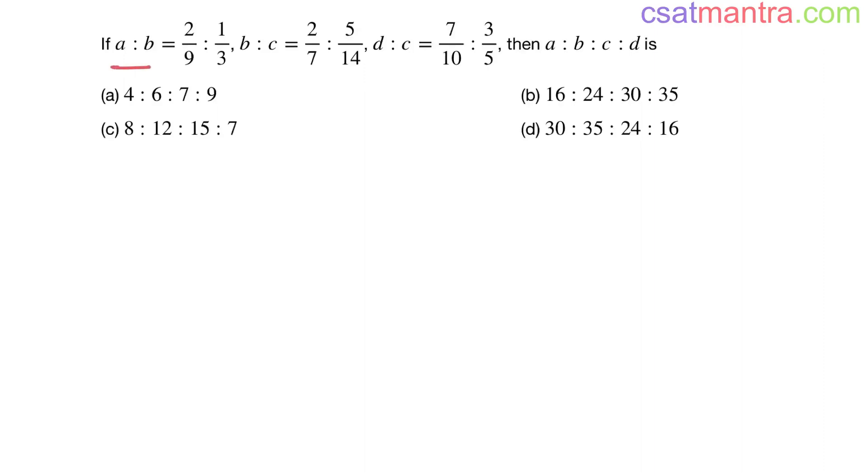Three ratios are given: a is to b is 2/9 to 1/3, b is to c is 2/7 to 5/14, d is to c is 7/10 to 3/5. We are asked to find a is to b is to c is to d. I am proceeding with third mantra because this is smaller, this is bigger, smaller, bigger.